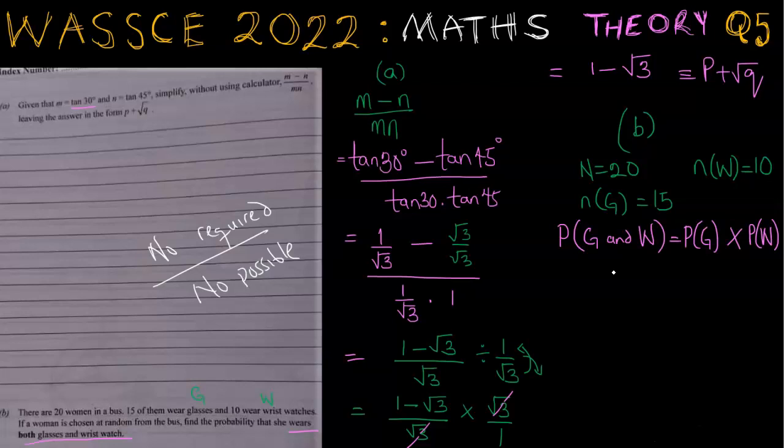The 20 here is the number of possible outcomes because we've got 20 people in the bus. Now to obtain the probability of G, that's going to be the number of people with glasses divided by the number of people in the bus. So this is going to be 15 over 20 times the probability of wristwatch, which is 10 over 20. And we can see here that this simplifies: 10 reduces 20 twice, 5 reduces 15 three times, giving us 3 over 4 times 1 over 2. Therefore, the probability that the woman chosen at random wears both glasses and wristwatch is 3 over 8.